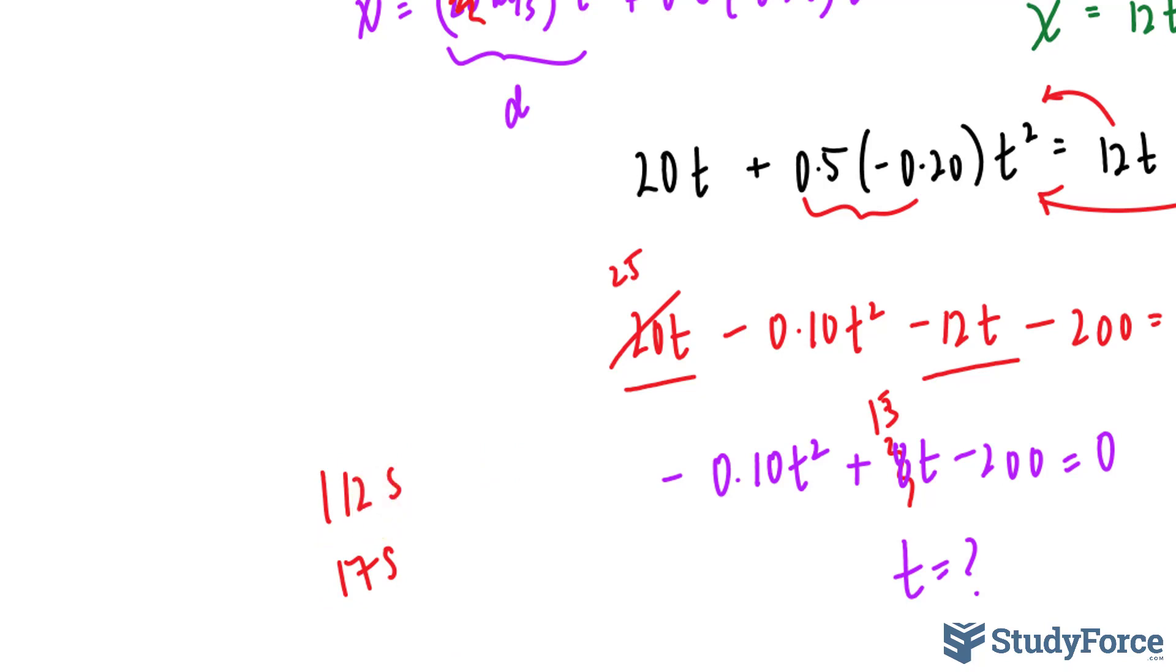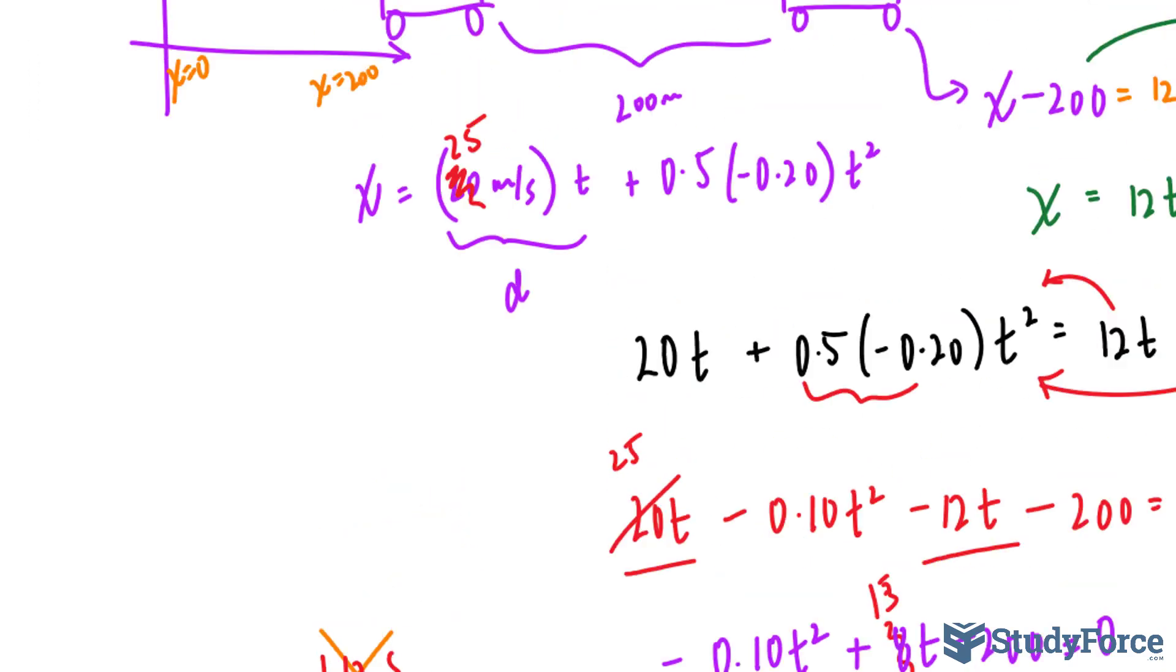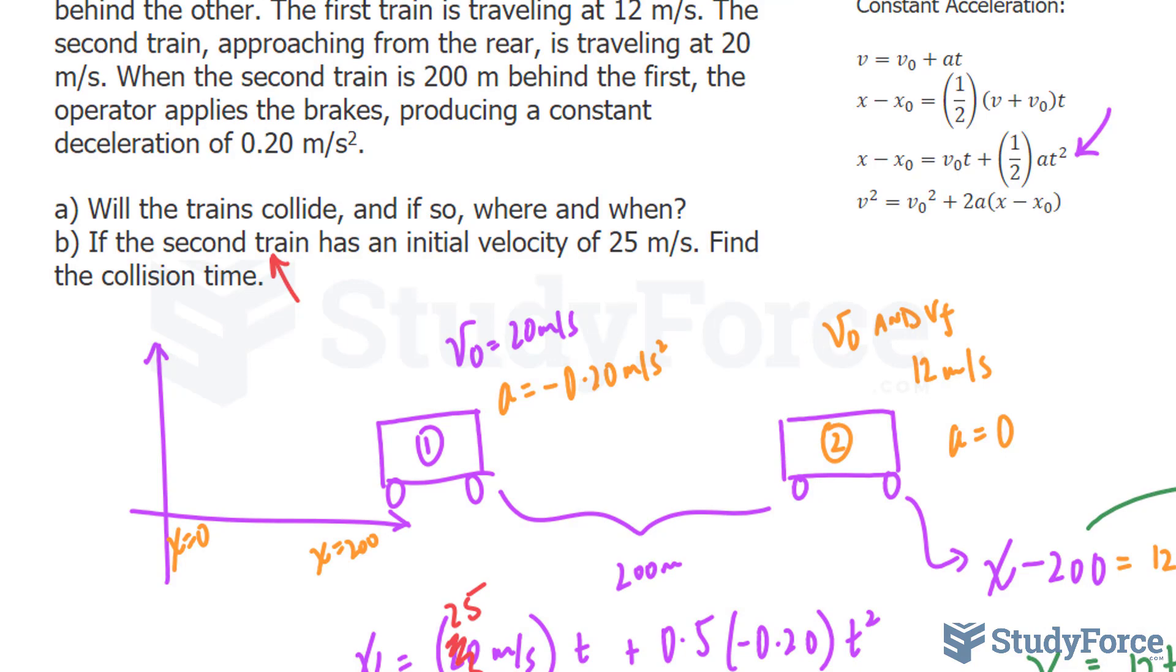Of these two, I will omit 112 seconds. Because remember, a quadratic is a parabola and you should get up to two roots, and depending on the context of your question, you might have to reject one of them. 17 seconds makes more sense to us because it's the earlier time. So they will collide at 17 seconds, and that solves the question.